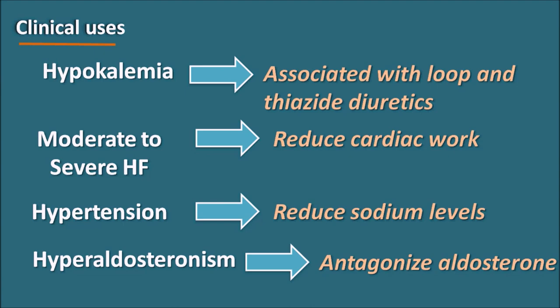In summary, potassium-sparing diuretics are chemically different but pharmacologically similar. They act in two ways: blocking renal tubular sodium channels, or antagonizing the actions of aldosterone. Their pharmacological actions include increased excretion of sodium, calcium, magnesium, and water, but decreased excretion of potassium and uric acid. Because they spare potassium, they are used in hypokalemia, heart failure, hypertension, and hyperaldosteronism.